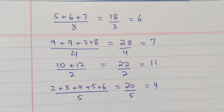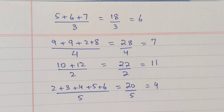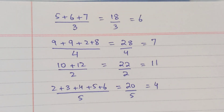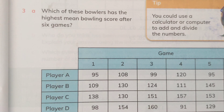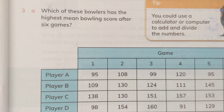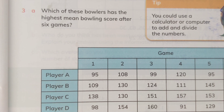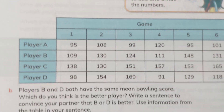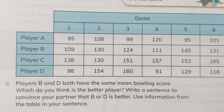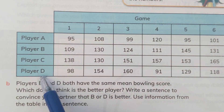You see how easy it is to calculate the mode and the mean. Calculating the median involves some steps, but when you practice a lot it becomes easier. Let's do question number 3 the same way, on page number 41. It says: which of these bowlers has the highest mean bowling score after 6 games? There are 4 players.